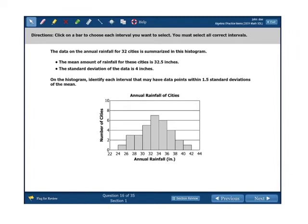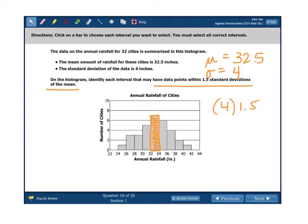Onward. Okay, click on a bar to choose each interval you want to select. That's in our directions up here at the top this time. You must select all correct intervals. So what would actually happen on the SOL test for something like this is the actual bars themselves, when you click on them, would highlight around the edges. So say I clicked on this very central bar, it would highlight around the edges, or it might even show it shaded in, like so. And what they're asking us to do here, it says, The data for the annual rainfall for 32 cities is summarized on the histogram. The mean amount of rainfall for the cities is 32.5 inches. That's the mean. The standard deviation is 4. On the histogram, identify each interval that may have data points within 1.5 standard deviations of the mean.